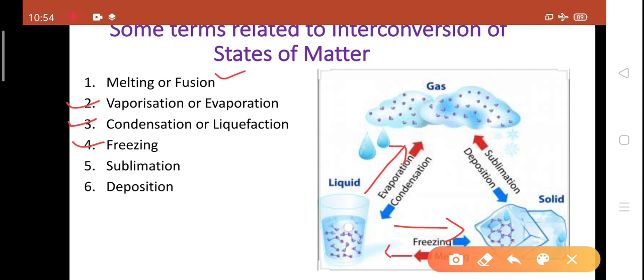Next, sublimation. It is a process in which solid directly changes to gaseous state without changing to liquid. And the reverse process is known as deposition. In this, gases directly change to solid state.